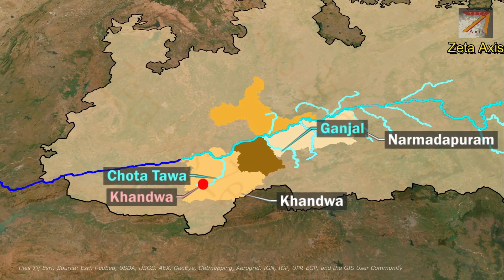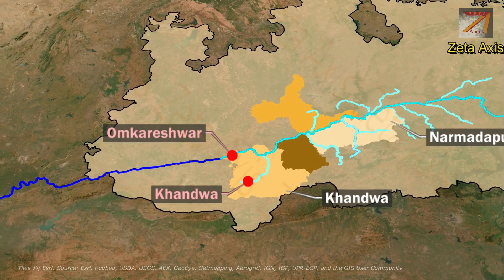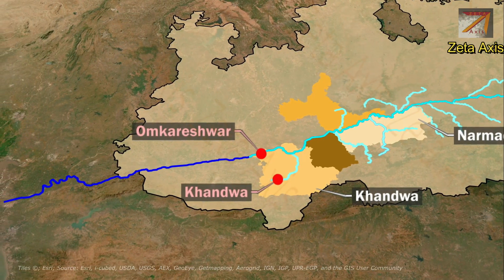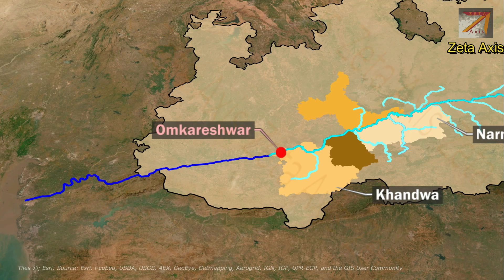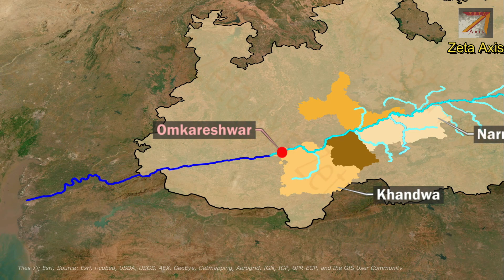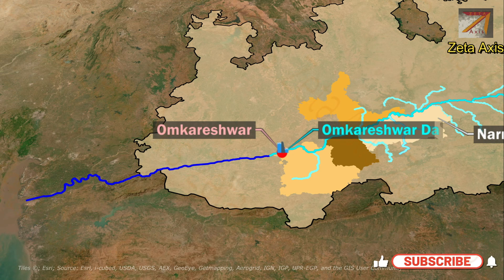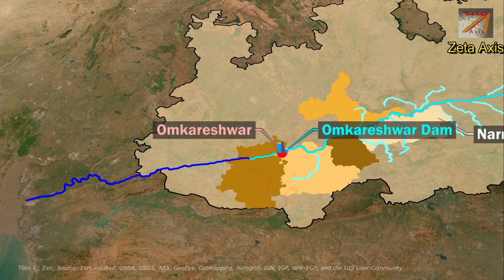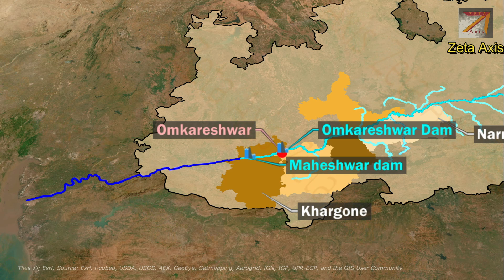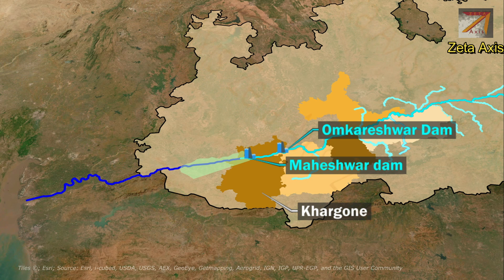Within Khandwa district is located Omkareshwar, one of the twelve revered Jyotirlinga shrines dedicated to Lord Shiva. The Omkareshwar temple is situated on an island called Mandhata in the Narmada river, and just before it, Omkareshwar Dam is also constructed on the Narmada. The river then enters Khargone district where Maheshwar Dam is built. Beyond this, the Narmada flows into the Mandaleshwar plain — the second fertile basin — which is about 180 km long and 65 km wide in the south.